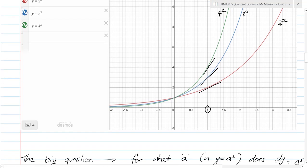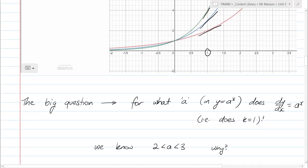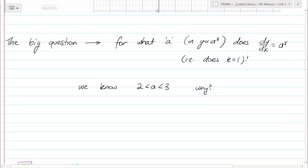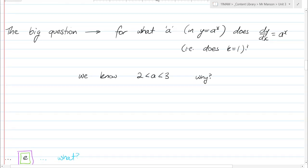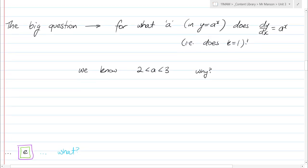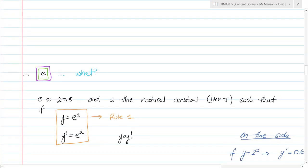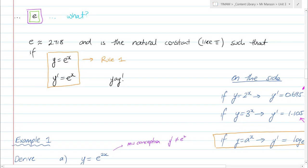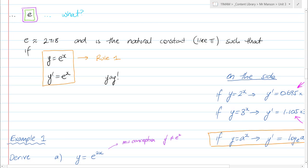And I'm going to break it to you now, and this is the point in the lesson where this is the stuff you actually need to know. My introduction is giving you that understanding. The big question was, for what a in y^x does dy/dx equal a^x? We know that a has to be between 2 and 3. I've asked the question why there, but we've talked about that already. And the answer is e.